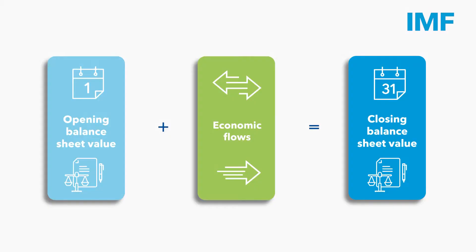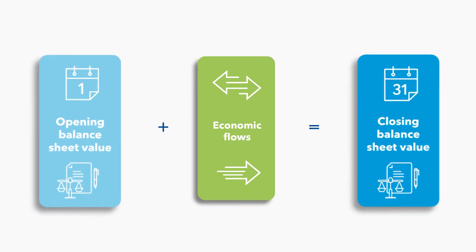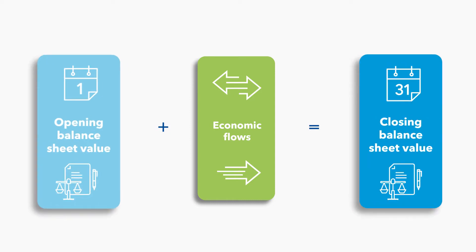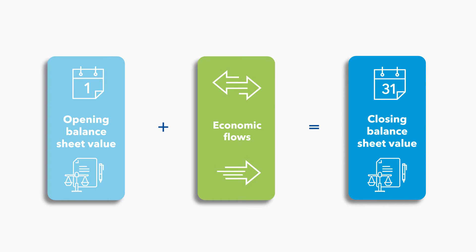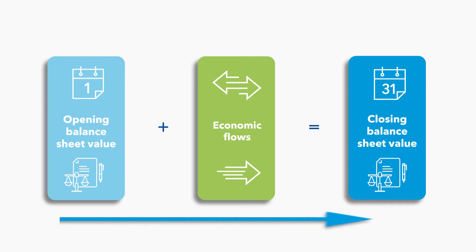In macroeconomic statistics, an integrated statistical framework means that stock positions between two points in time are connected through economic flows. In other words, we can explain all the changes between two stock positions recorded in the balance sheet by the economic flows that occurred in the period between the two stock positions. We can say that stock positions and economic flows are horizontally integrated.